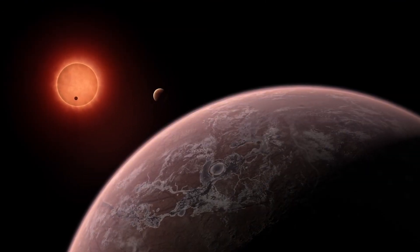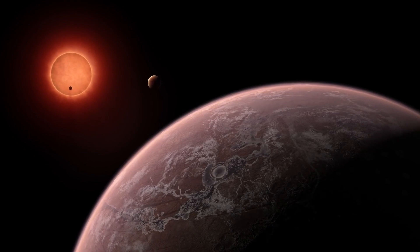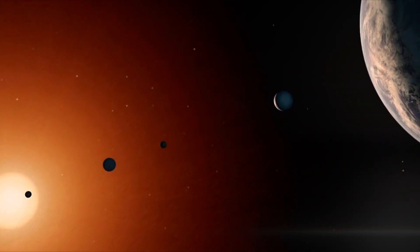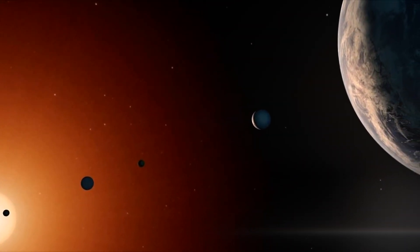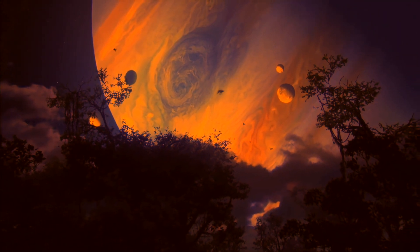If you stood on one of the planets in the Trappist-1 system, you would easily be able to resolve the disks of other planets with your naked eye. And as long as they were lined up in their orbits at the time and their closest approach, some of the other planets would appear as large as the moon does in our sky.